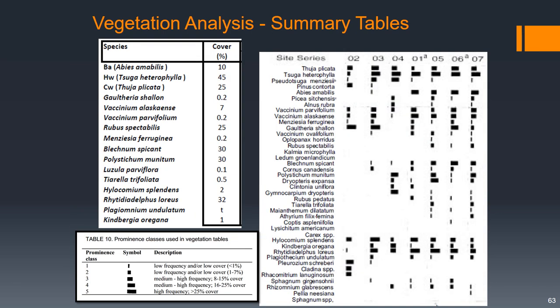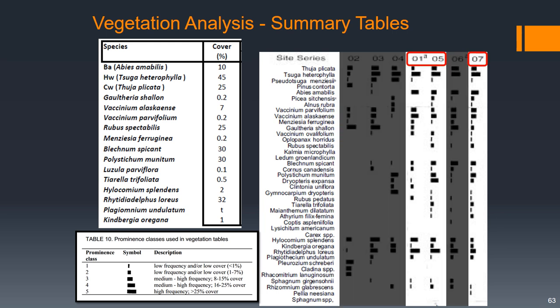Based on the classifications we've done so far, we've had hints that we might be in site associations 1, 5, or 7. So those are the ones we're going to look at here.